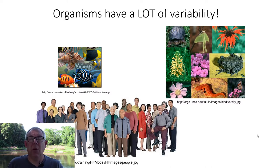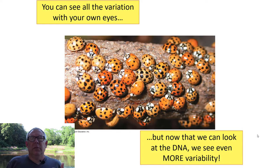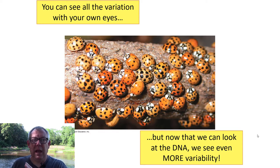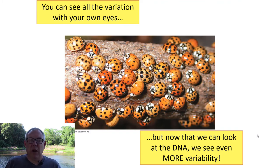Your mama always told you that you were special — well, you are, because everybody's different. Darwin studied living things and observed this variability with his own eyes. These days we look at DNA, the ultimate source of all that variability. When you look at DNA, it's a ridiculous, unimaginable amount of variability — every organism has unique DNA. We can see that now, even though Darwin couldn't. In biology, variation is the rule.